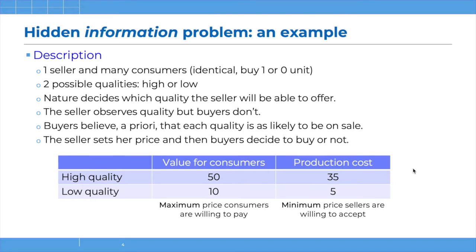What is common knowledge to both sellers and buyers are the values in this table. If the good is of high quality, consumers are willing to pay up to 50 to acquire one unit, and the sellers would need to get at least 35 to cover their initial costs. As for the low quality, the maximum willingness to pay of the consumers is 10, and the minimum price that sellers would accept to sell low quality is 5.